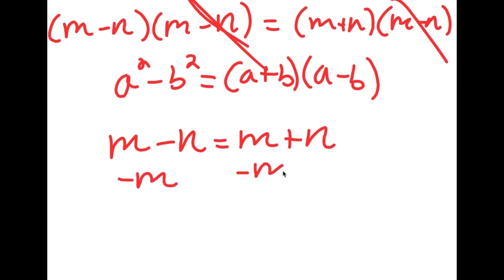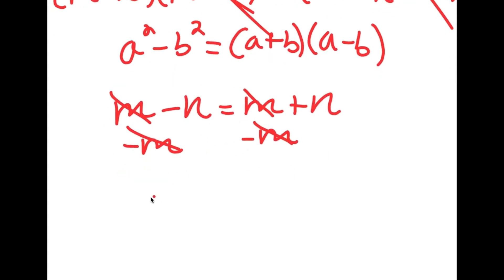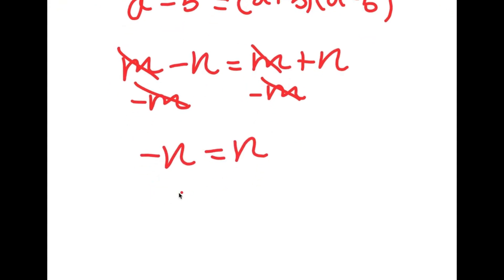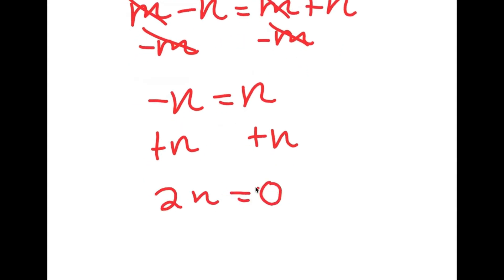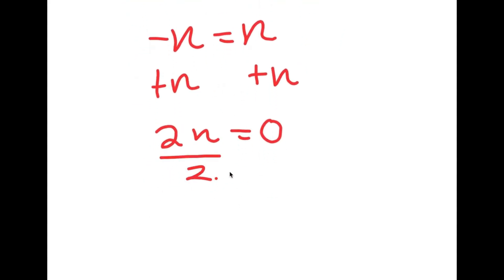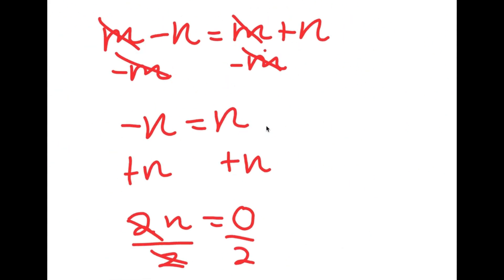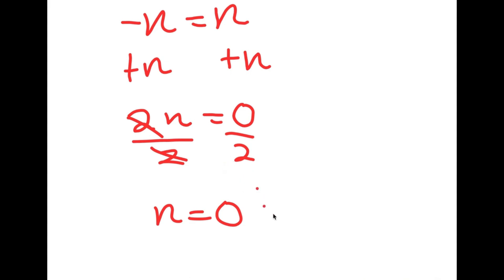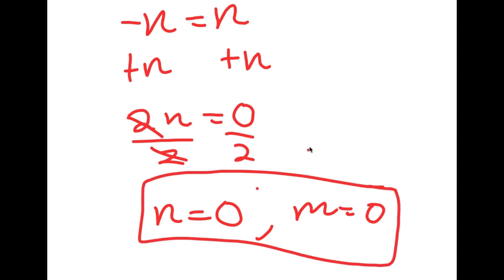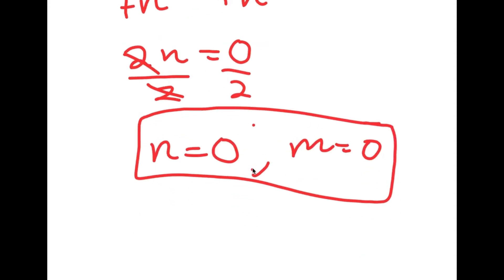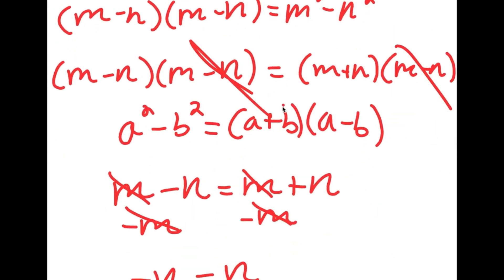If I subtract m on both sides, I get negative n equals positive n. Adding n to both sides gives 2n equals 0, meaning n equals 0. And if n equals 0, then m is also equal to 0. So those are my two solutions to this equation.